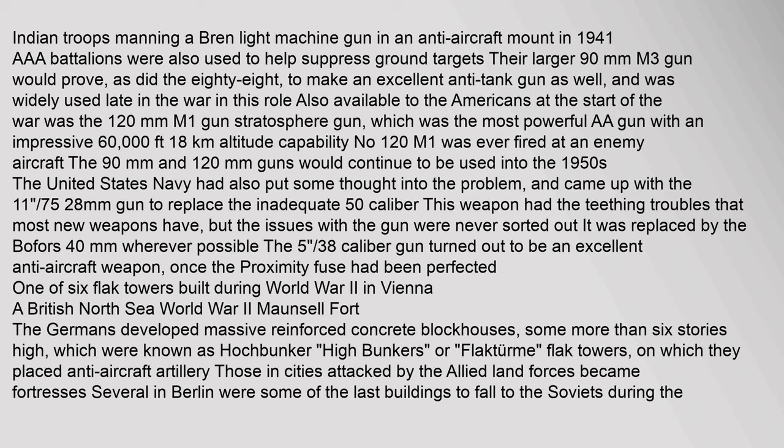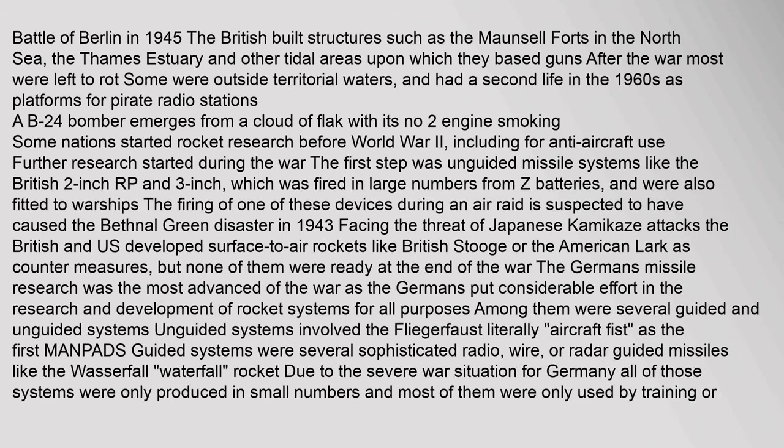AAA battalions were also used to suppress ground targets; their larger 90mm M3 gun proved, as did the 88mm, to make an excellent anti-tank gun as well, widely used late in the war. Also available to the Americans was the 120mm M1 gun (stratosphere gun), the most powerful double-A gun with an impressive 60,000-foot ceiling. In 1945, the British built structures such as the Maunsell Forts in the North Sea, the Thames estuary, and other tidal areas upon which they based guns; after the war most were left to decay and had a second life in the 1960s as platforms for pirate radio stations.